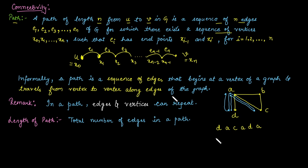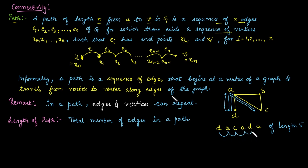The length of this path is found by counting the number of edges: d to a (1st edge), a to c (2nd), c to a (3rd), a to d (4th), d to a (5th). The total number of edges in this path is five, so it is a path of length five.